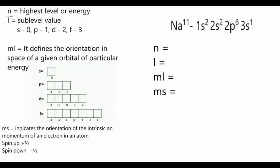The principal quantum number indicates the highest level or energy. The next quantum number is the secondary quantum number, also known as the azimuthal quantum number. It divides the shell into sublevels called orbitals. The orbitals are s, p, d, and f. The symbol for the secondary quantum number is l, and it determines the sublevel value.